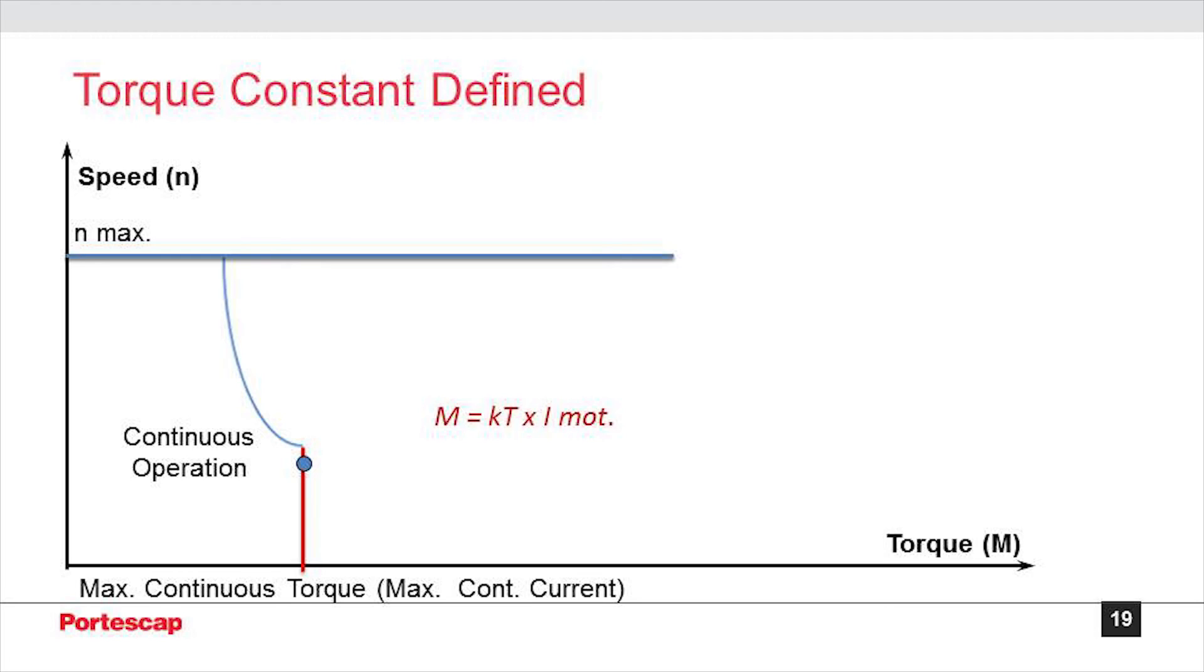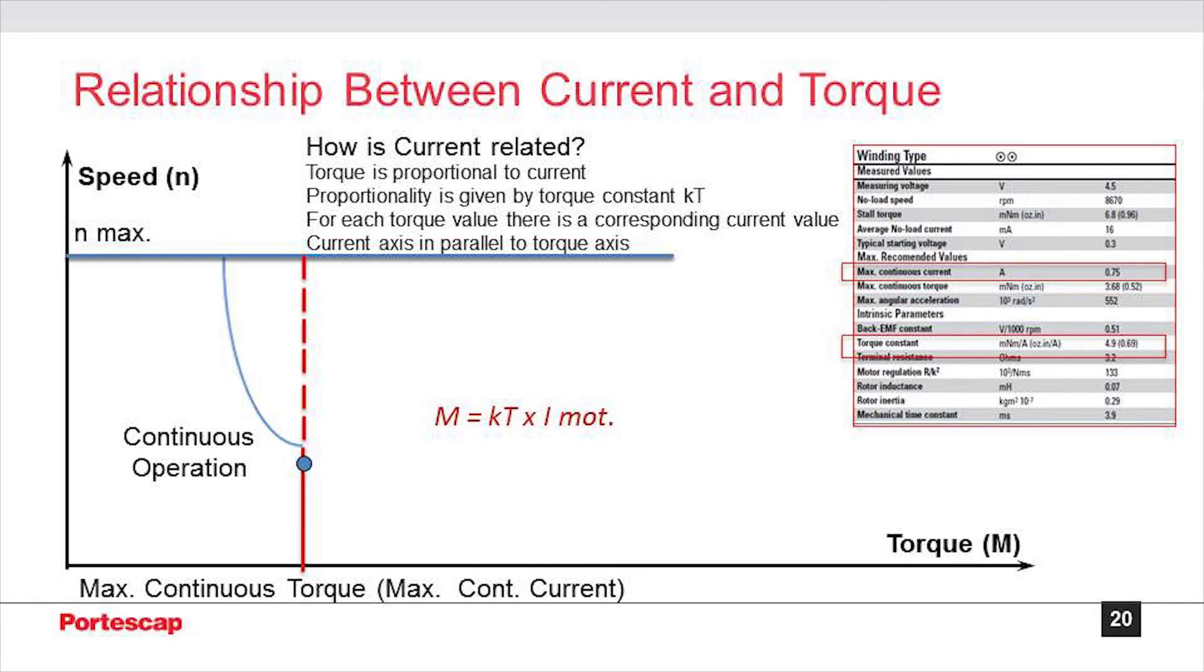The torque constant, KT, is the proportionality factor for a given motor's current and torque. So the torque can be replaced by the current on the x-axis as shown in the slide. Current measured at max continuous torque is the max continuous current. The torque constant is provided in the catalog as shown in the slide highlighted in red. The torque constant is the amount of torque in 10 mNm produced when 1A of current is passed through the motor.